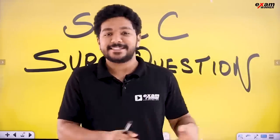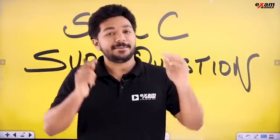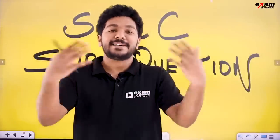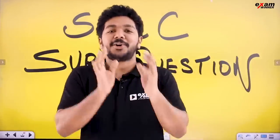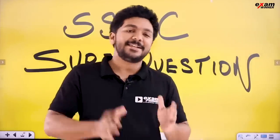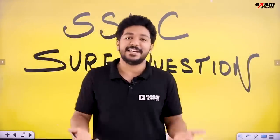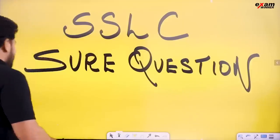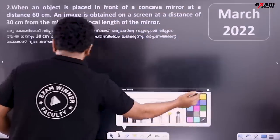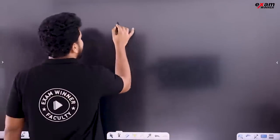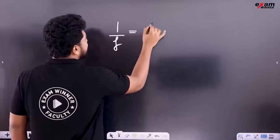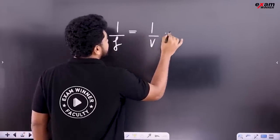Subscribe to this channel. This covers the most important subjects of physics, chemistry, biology, and math — important short videos. Let's start. I am going to show you a simple theory. The theory is the mirror equation: 1 by focal length is equal to 1 by v plus 1 by u.